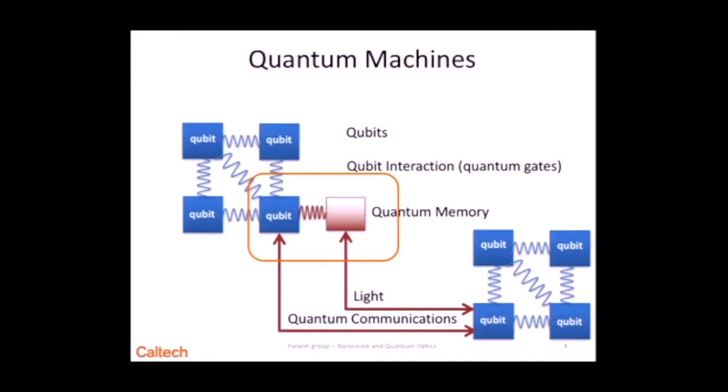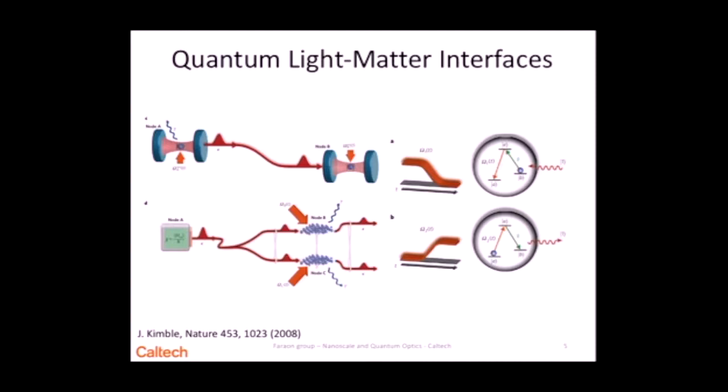There is a relatively big community working on developing these types of machines, and in particular my group is interested in how we make connections between these machines using light — how do you take qubits and quantum memories and interconnect them via optical channels. The reason why we like to do this is because light is the best medium for communication, so we like to interconnect matter to light, and that's why we say that we want to develop quantum light-matter interfaces. This type of device has been proposed by several people, including Professor Jeff Kimball here at Caltech. This is a picture from one of his review papers in 2008.